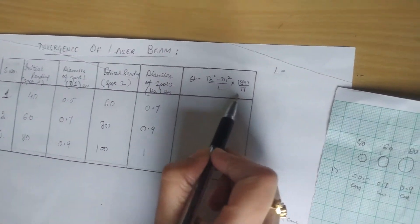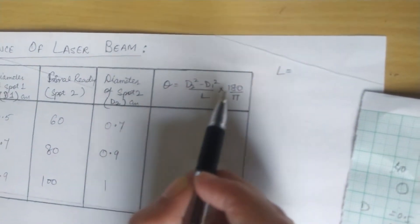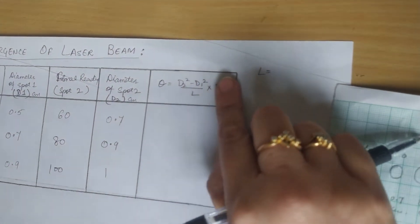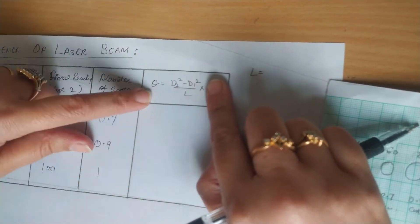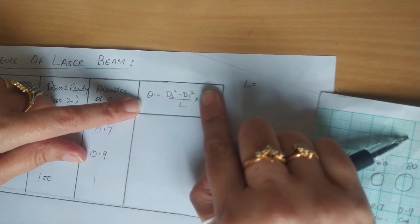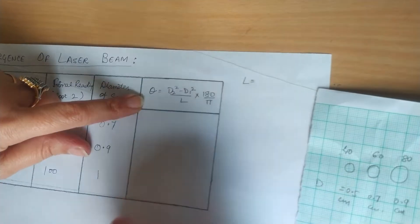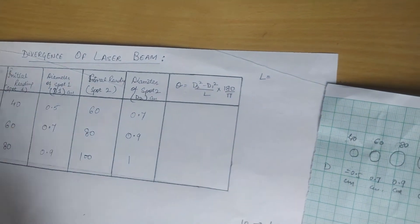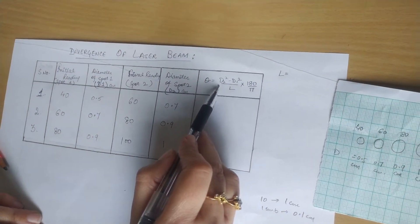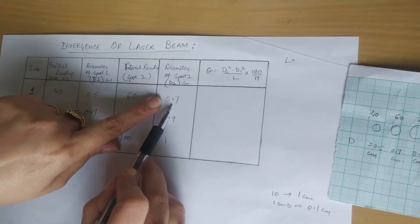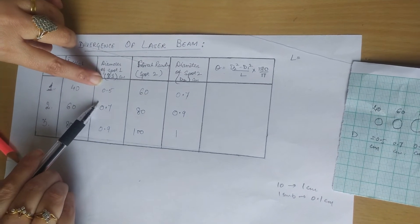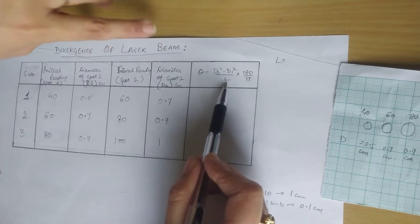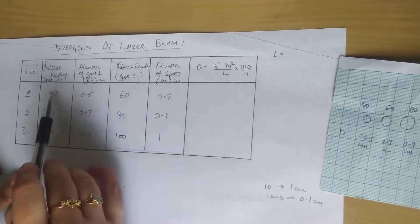This is the formula of angular divergence. If we don't consider 180 by π, then this angle will be in radians. To convert it into degrees we multiply it with 180 by π. Here D2 is the diameter of second spot, D1 is diameter of first spot, and L is the distance between two positions.